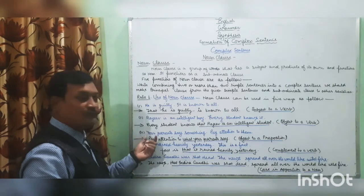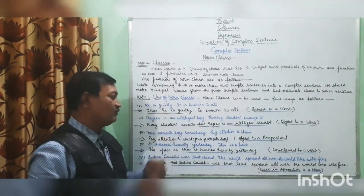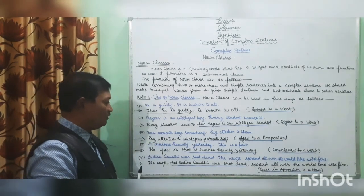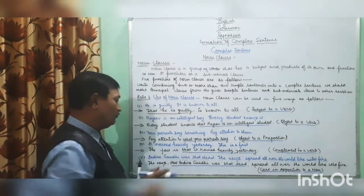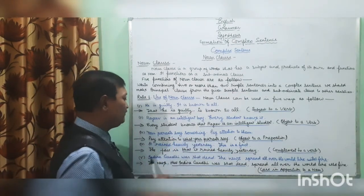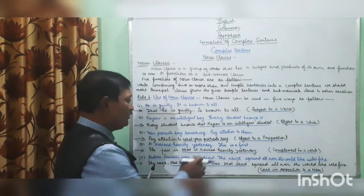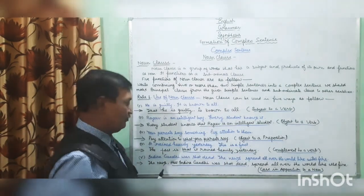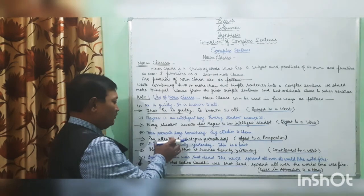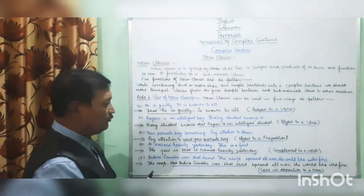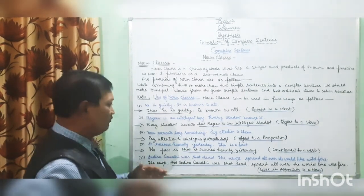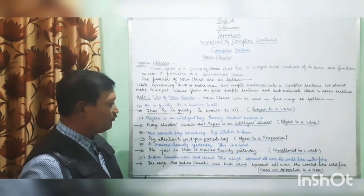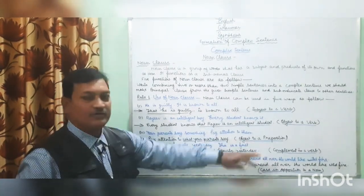Third example — third function of noun clause: 'Your parents say something. Pay attention to them.' Combined: 'Pay attention to what your parents say.' The underlined part is the noun clause and here it is working as object to a preposition. The preposition 'to' is used, and after 'to', 'what your parents say' has been used as noun clause, because 'pay attention to' alone is not clear enough.